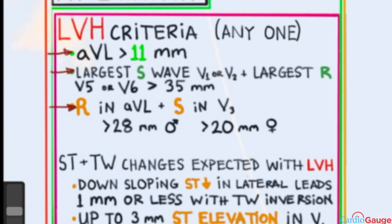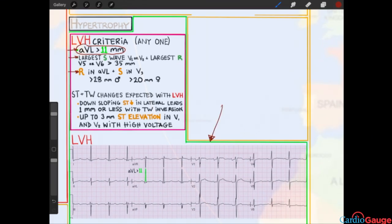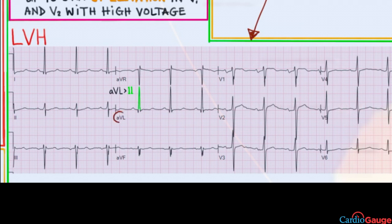I don't find that necessarily to be true in my clinical practice, but that's what the science says. The first criterion is AVL greater than 11 millimeters. Looking at the EKG tracing, the height of the QRS in AVL is more than 11 millimeters — something like 14. I find that easy to remember because AVL, L looks like a 1, and then there's LVH. So AVL greater than 11 is almost impossible to forget.